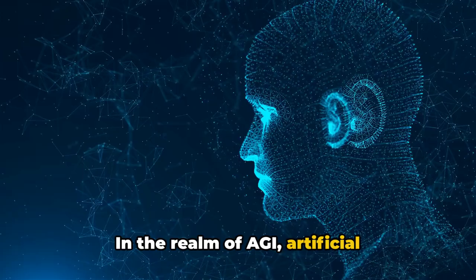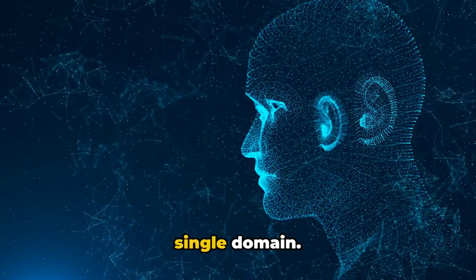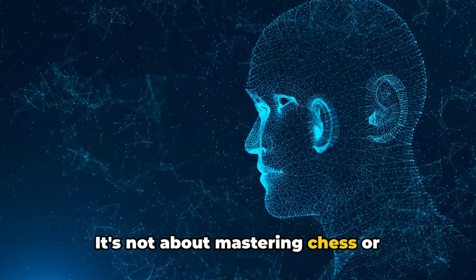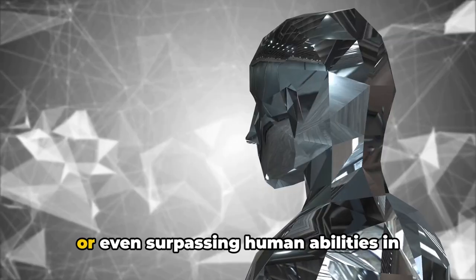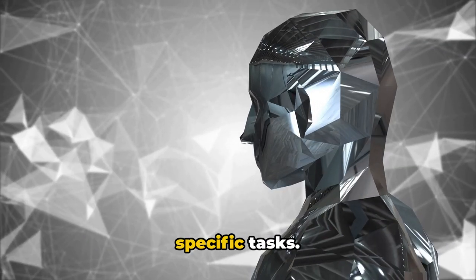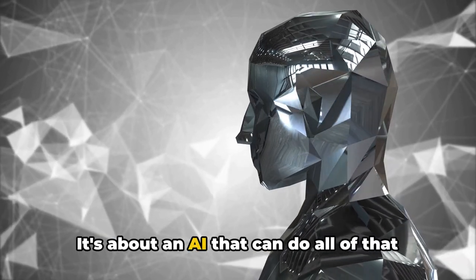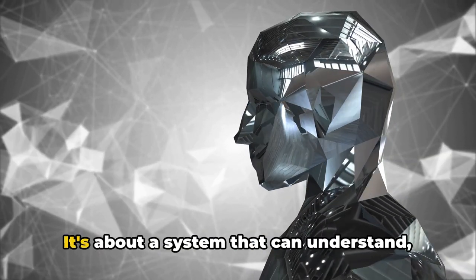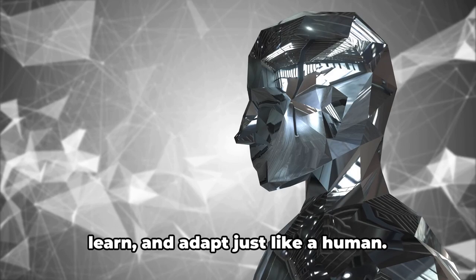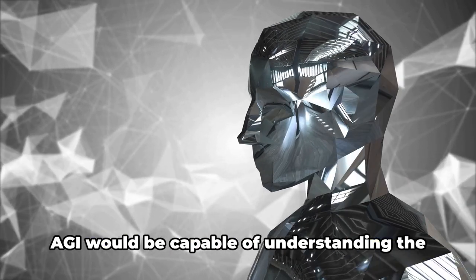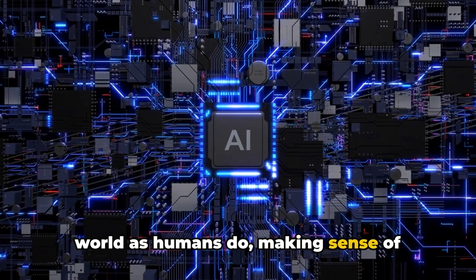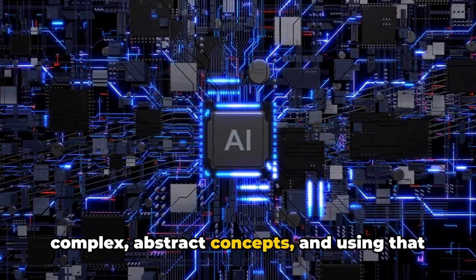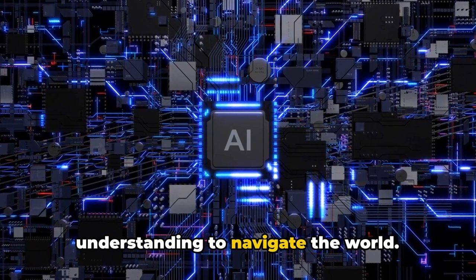In the realm of AGI, artificial intelligence isn't just limited to a single domain. It's not about mastering chess or diagnosing diseases. It's not about mimicking human behavior or even surpassing human abilities in specific tasks. It's about an AI that can do all of that and more. It's about a system that can understand, learn, and adapt just like a human. AGI would be capable of understanding the world as humans do, making sense of complex abstract concepts, and using that understanding to navigate the world.